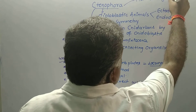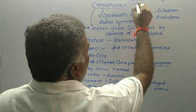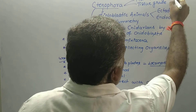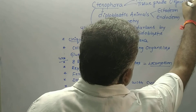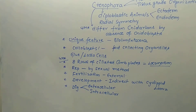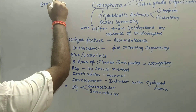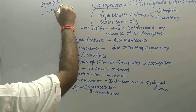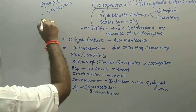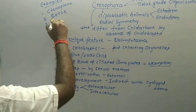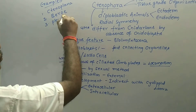Ctenophores are purely marine organisms showing tissue-grade organization, meaning their body functions are carried out by tissues. Examples of Ctenophora include Ctenoplana, Beroe, and Pleurobrachia.